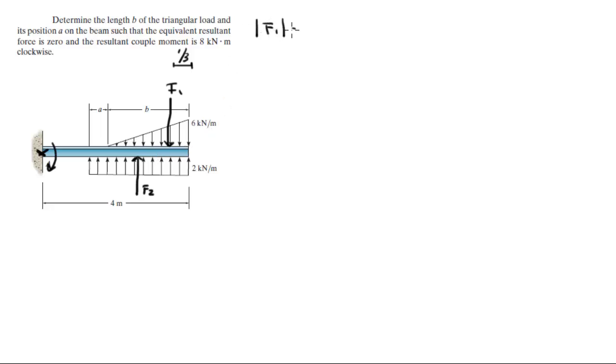So you know that F1 has a magnitude of the area of the triangle which is 6 times B, because it's the length of the triangle divided by 2, which would make this equal to 3B. Now F2 has a magnitude of the area of the rectangle which is 2 times A plus B, which would equal to 2A plus 2B.